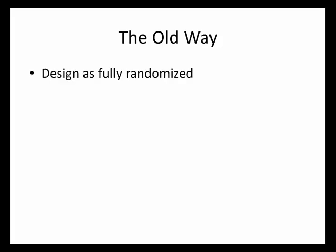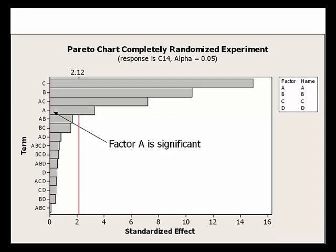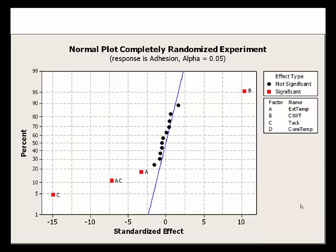It is precisely because of these different error terms that the determination of statistical significance of the hard to change factor used to get messed up. What if we were ignorant of the importance of restricted randomization, and designed the experiment as a fully randomized and replicated two-level factorial with 32 runs, but ran it with restricted randomization? If we analyze it in the usual way as a two-level factorial, the Pareto would now incorrectly indicate that factor A is statistically significant.